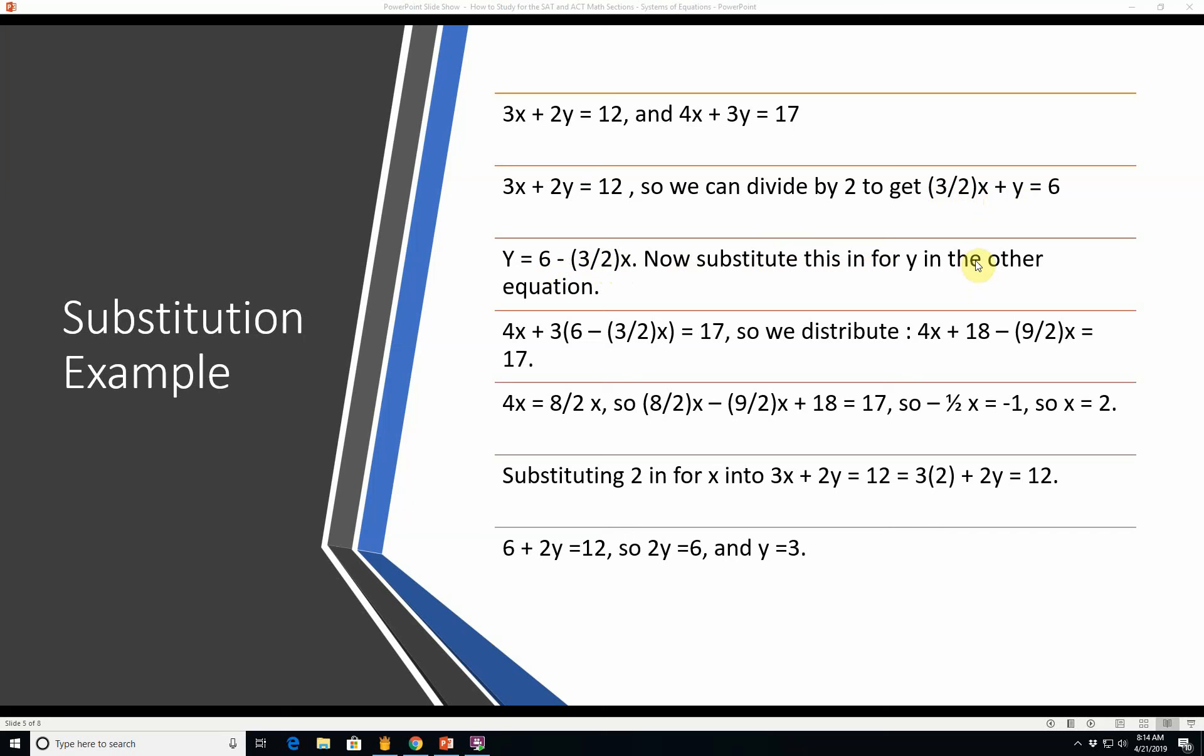Now substitute this in for y in the other equation. 4x plus 3 times 6 minus 3 halves x equals 17 so we distribute. 3 times 6 is 18, 3 times negative 3 halves is negative 9 halves. 4x is equal to 8 halves x. So we end up with 8 halves x minus 9 halves x plus 18 equals 17. So negative 1 half x is equal to negative 1. Multiply everything through by negative 2 and then you'll end up with x equals 2.